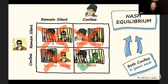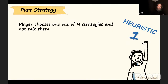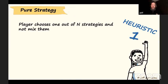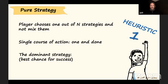When you both confess, that's called a Nash equilibrium. Now, two heuristics: the first is pure strategy, where you have many strategies available but choose the best one — you can't mix them because you're solely committed to one. In the interrogation room, your two choices really are confess or remain silent. Once you've done one or the other, it's a one-time choice — your pure strategy is your best chance for success.